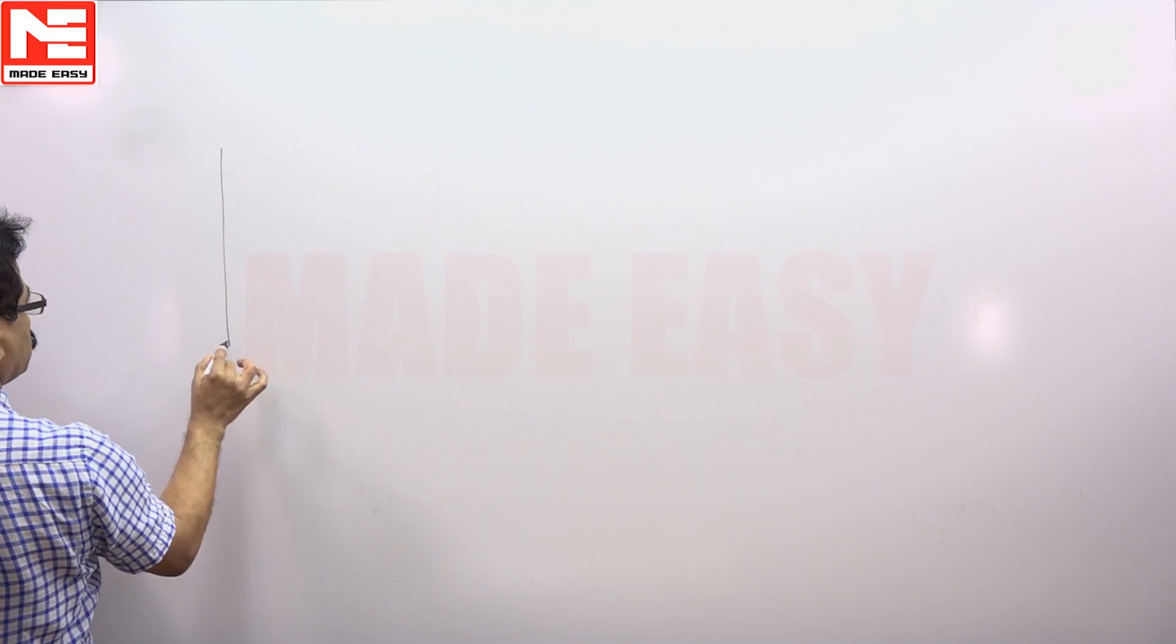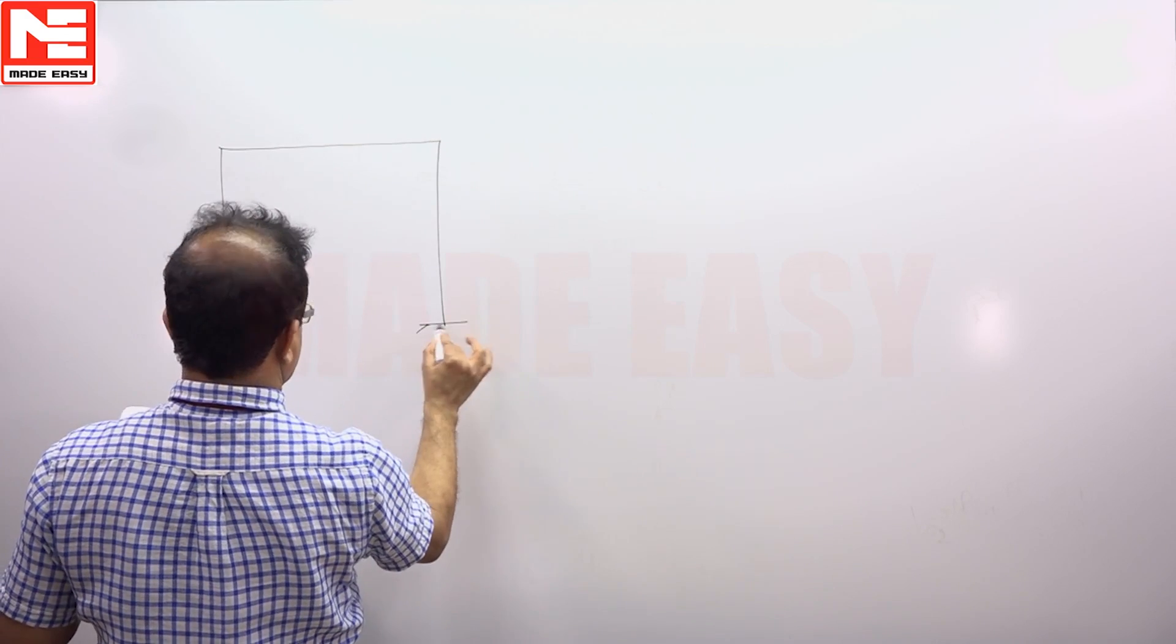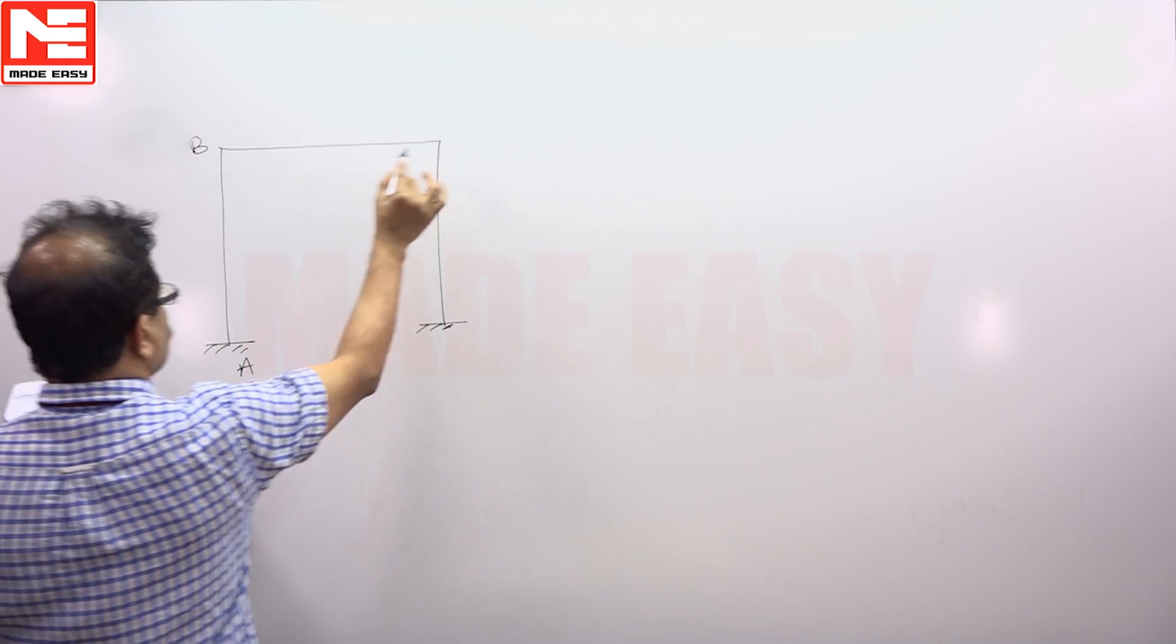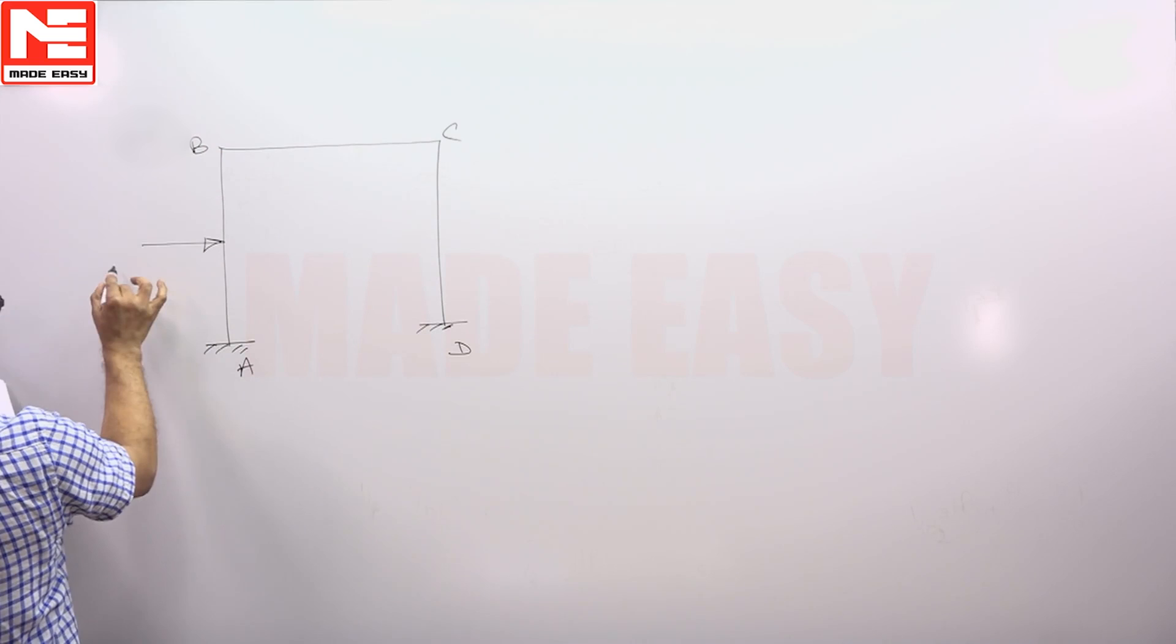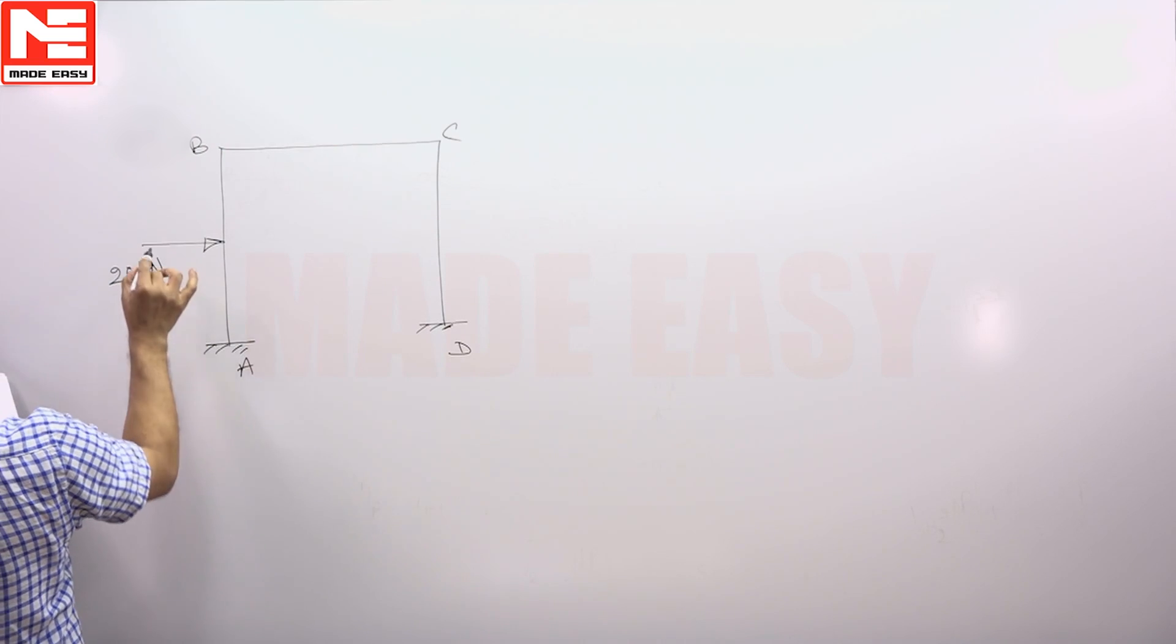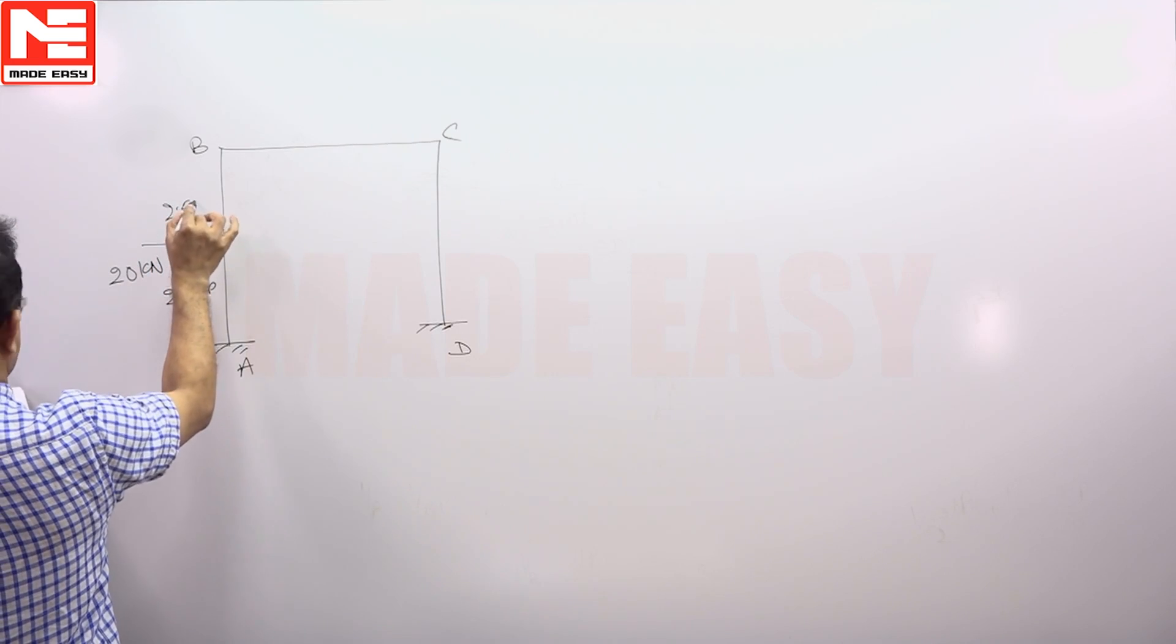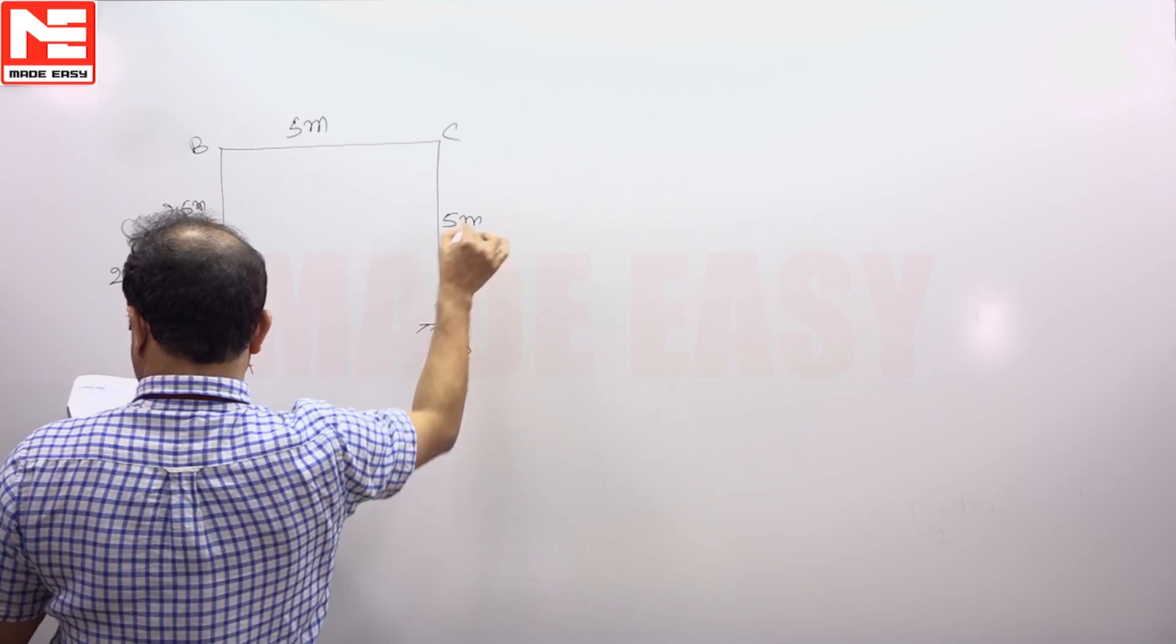Final end moments are given. This point is A, B, C, D. 20 kilonewton, 2.5 meters, 5 meters, 5 meters.